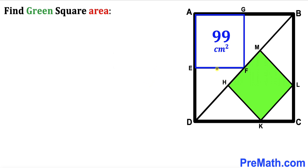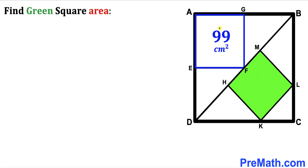Welcome to PreMath. In this video we have these two smaller squares: the blue square AEFG and the green shaded square HKLM, fully confined in a big square ABCD, such that BD is the diagonal of the big square ABCD. The area of the blue square has been given as 99 cm², and our task is to calculate the area of the green shaded square.